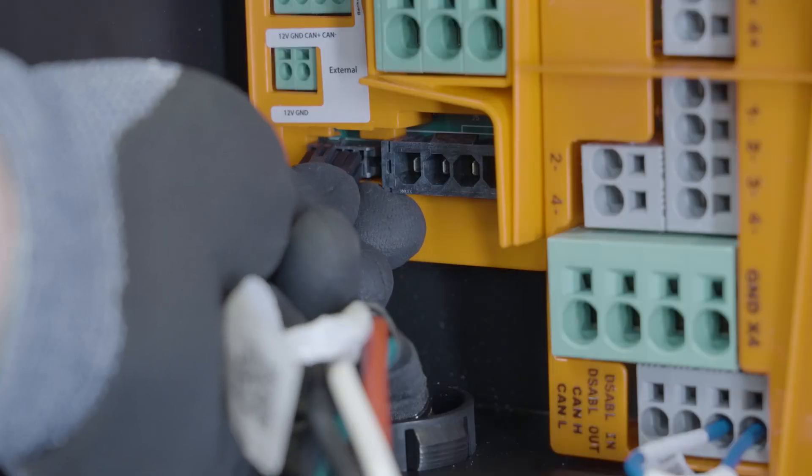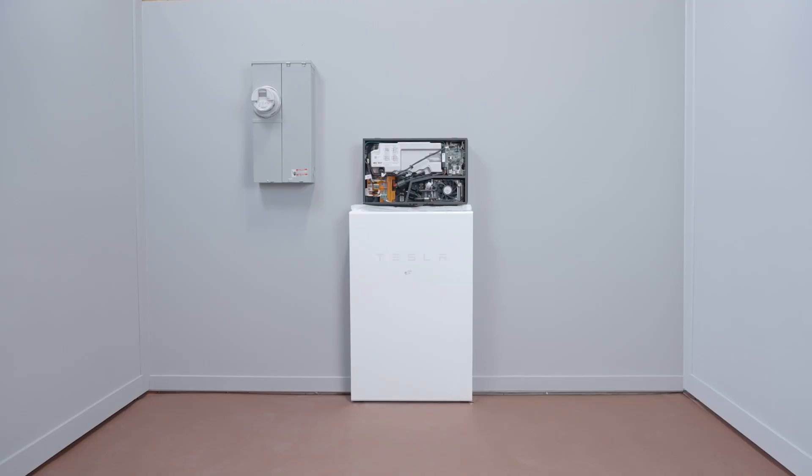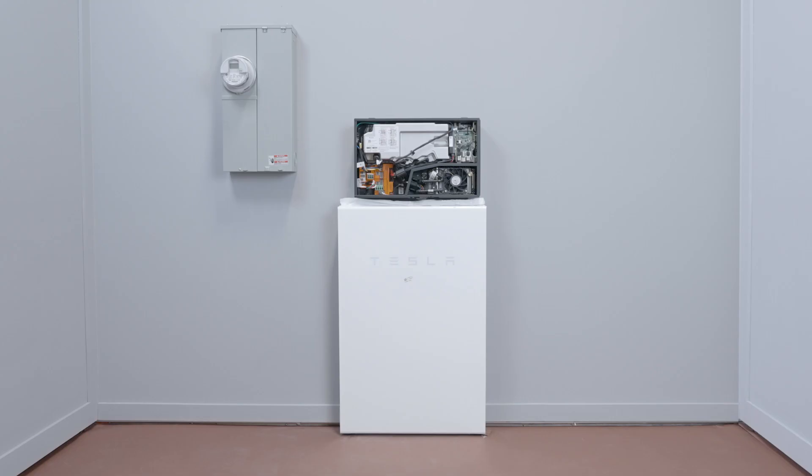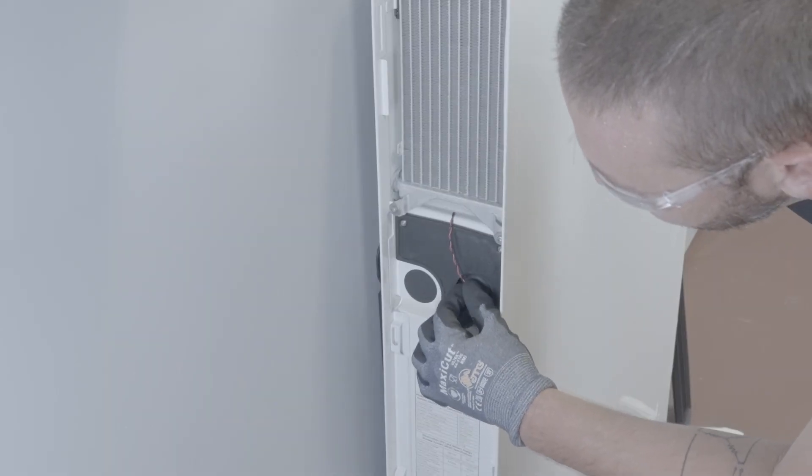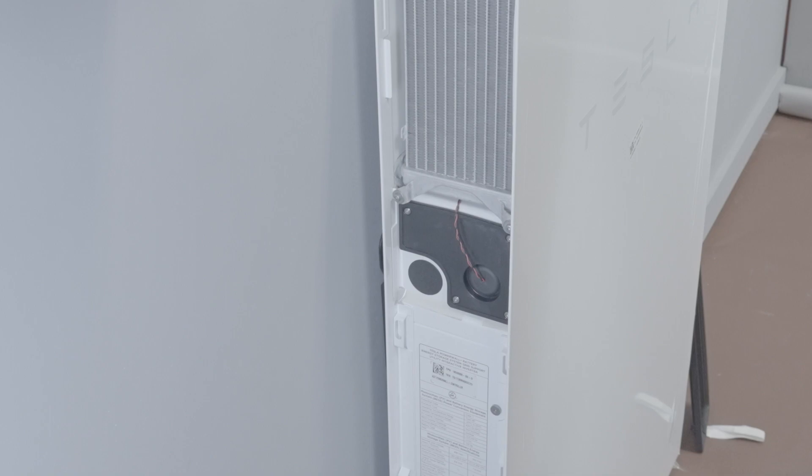Begin by connecting the two harnesses from the inter-product harness into the ports at the bottom of the solar assembly. The other ends of the two harnesses are already terminated inside the battery assembly wiring compartment. When installing a system with a single Powerwall Plus, it is not necessary to open the wiring compartment on the battery enclosure.